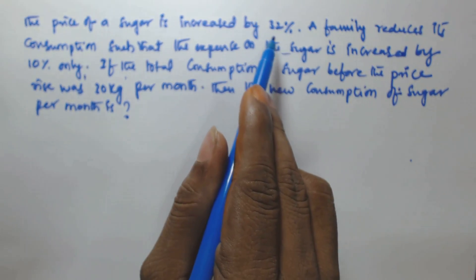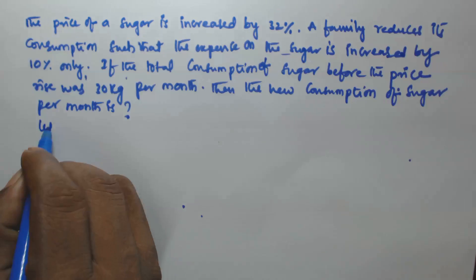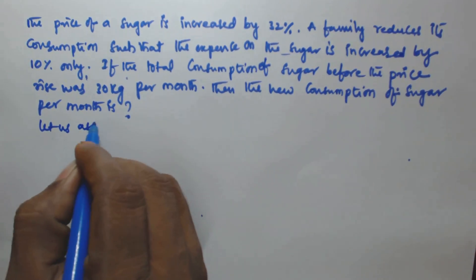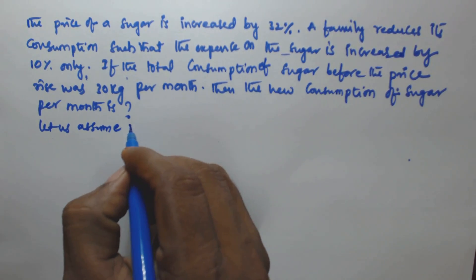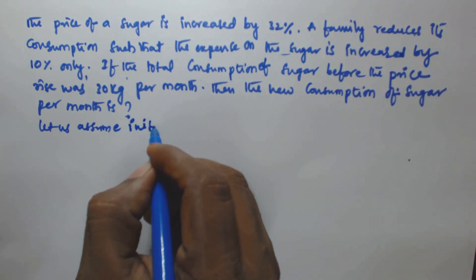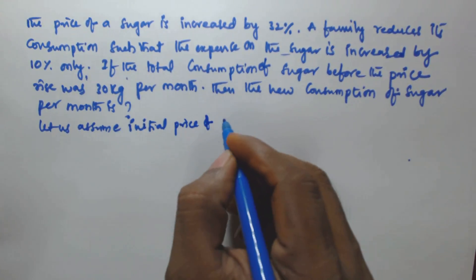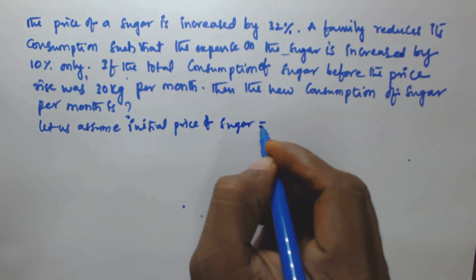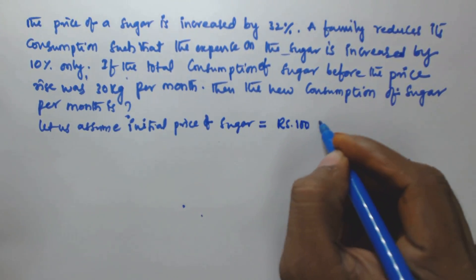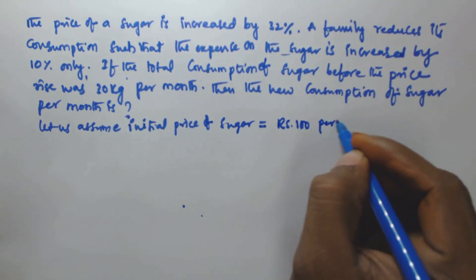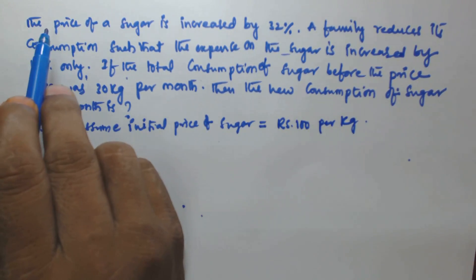We do not know the initial price of the sugar, so let us assume the initial price of sugar is equal to rupees 100 per kg.